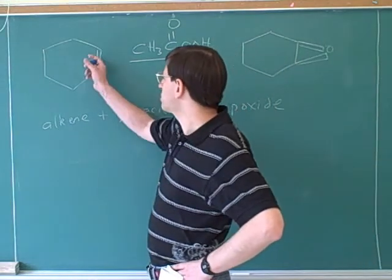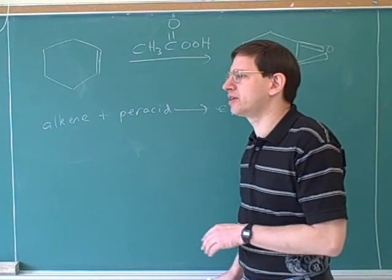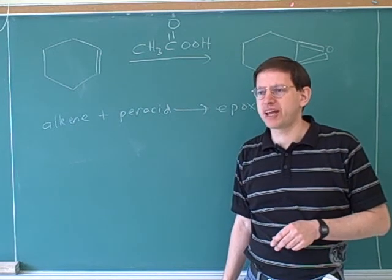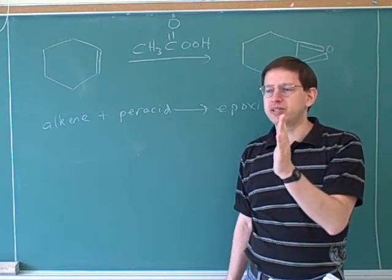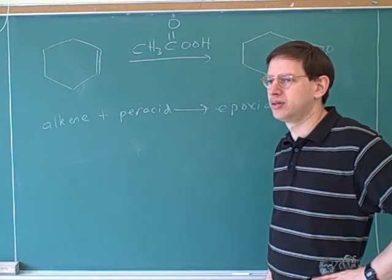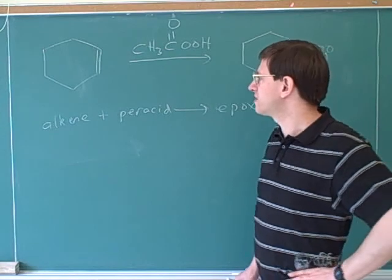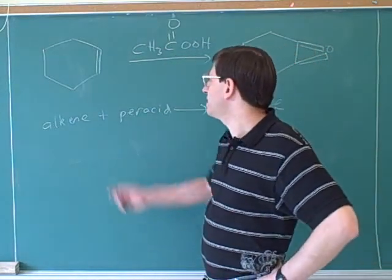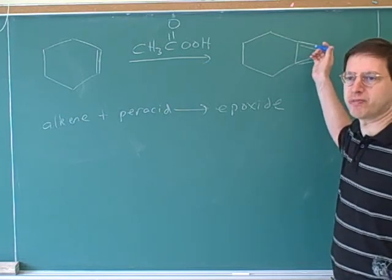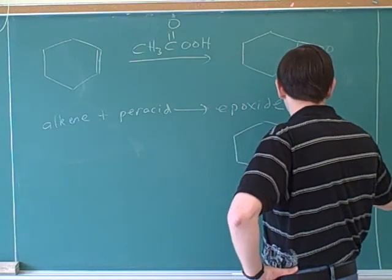Something else to watch out for: what's the geometry of the alkene carbons? Trigonal planar. When we attack something trigonal planar, we can get a maximum of two products, because planar means flat. There's the potential for the attacker to come from one side or the other. In this case, the oxygen could be added from the front or from behind — the peracid could be attacking from in front or from behind.